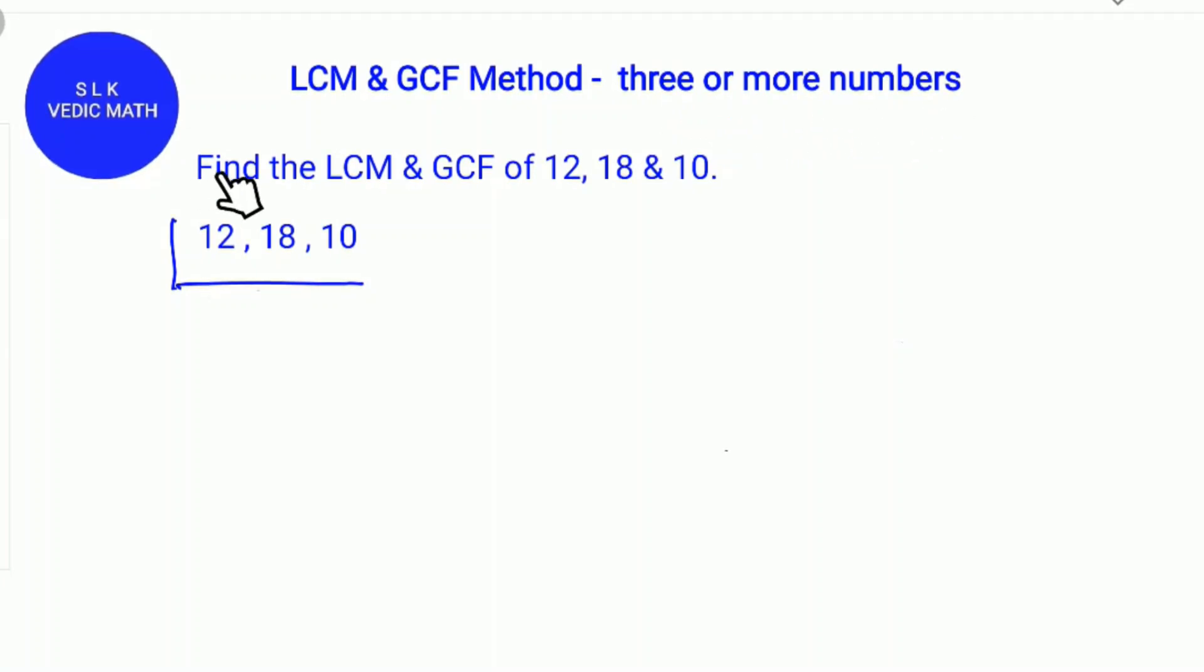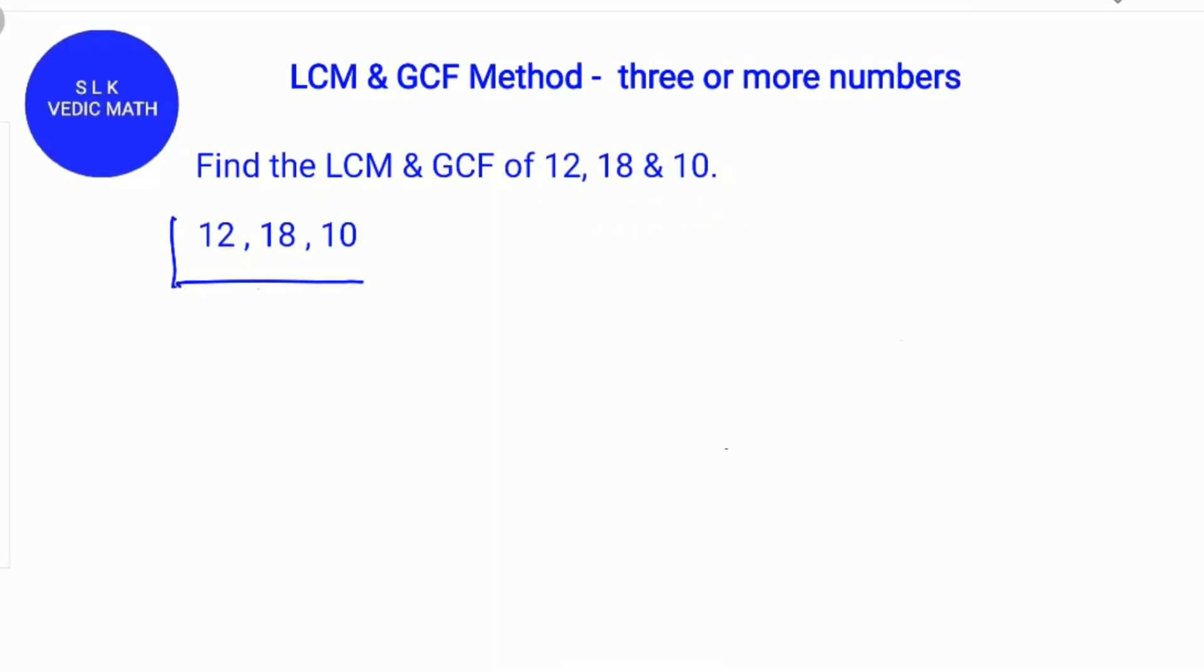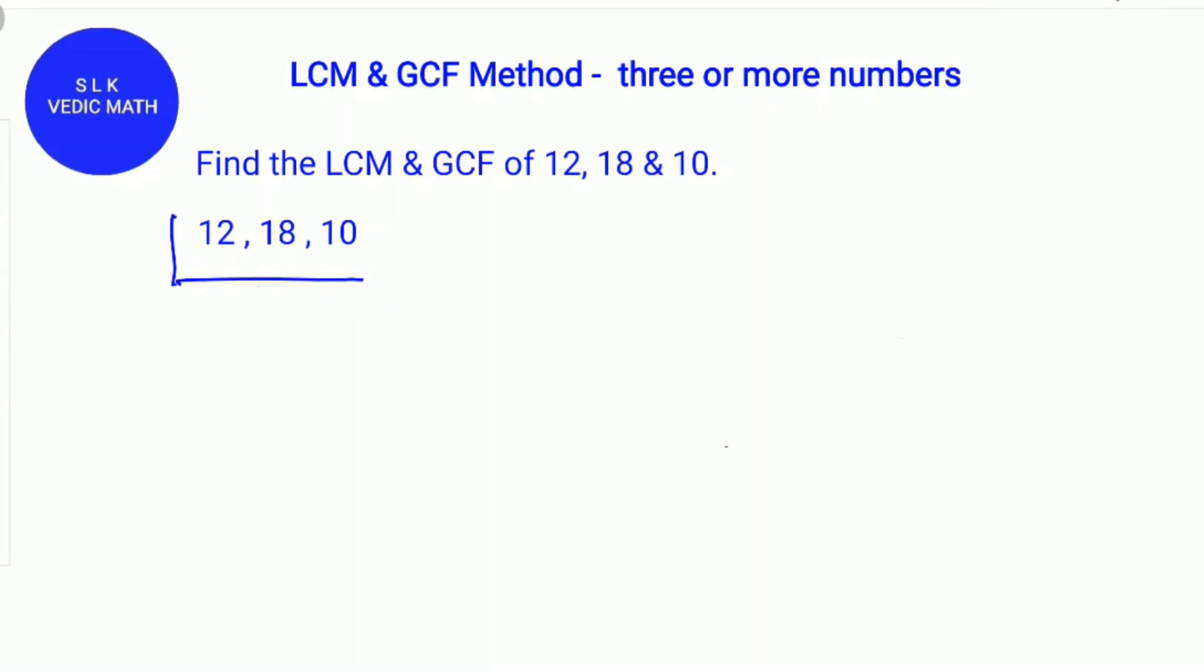Let's try an example. Find the LCM and GCF of 12, 18, and 10. First, find the common factor for 12, 18, and 10, which is 2.